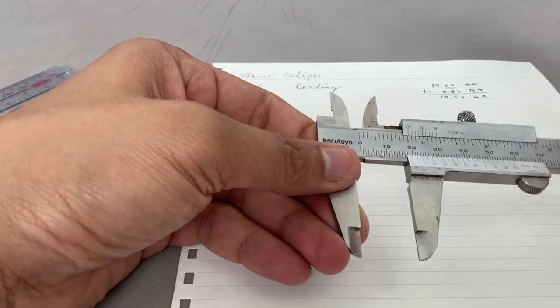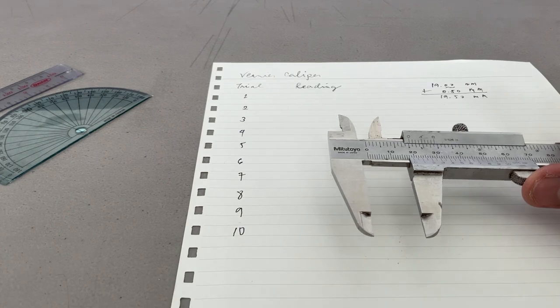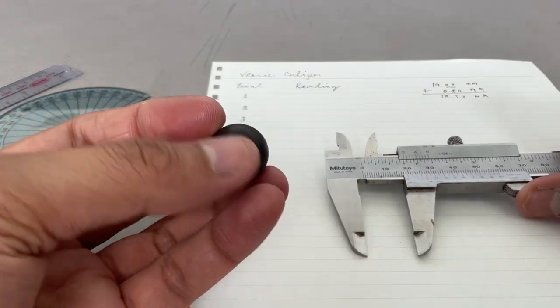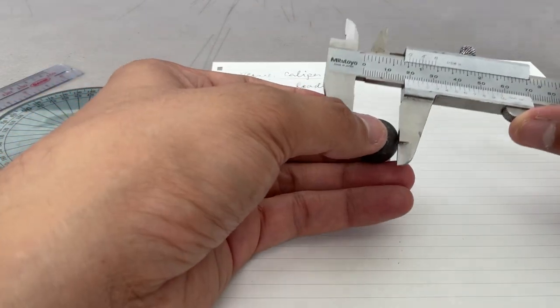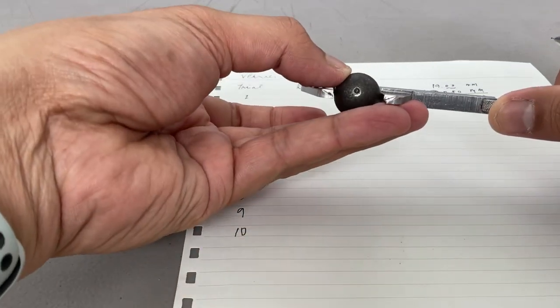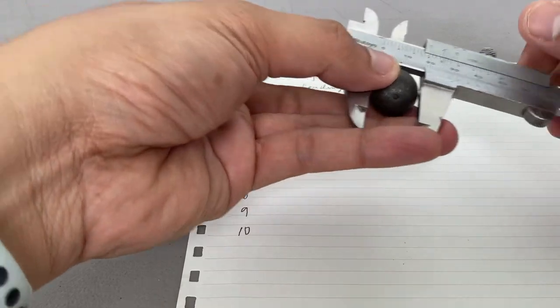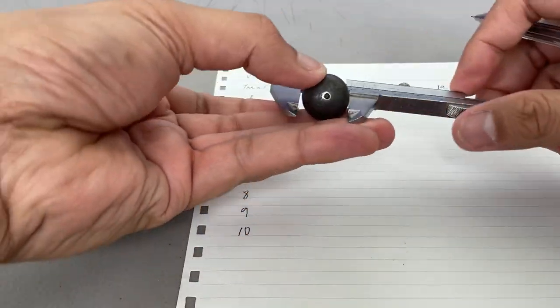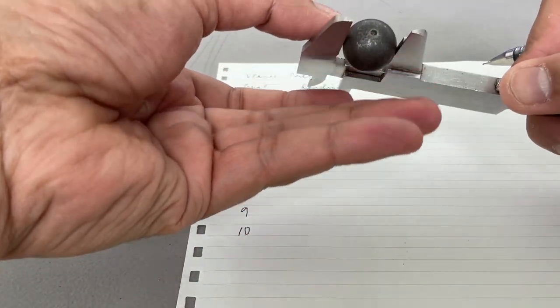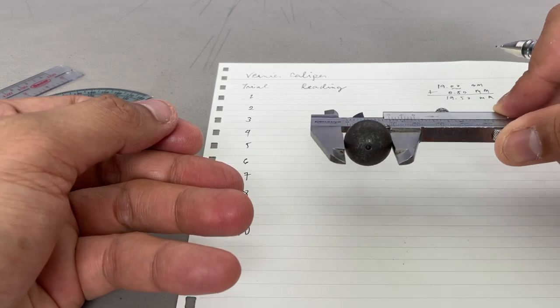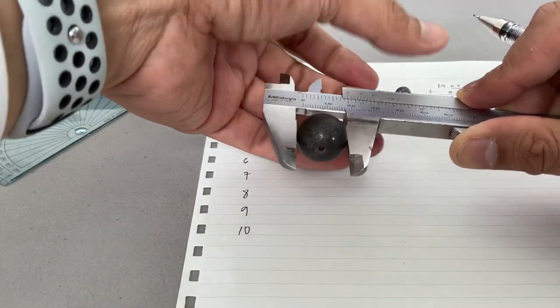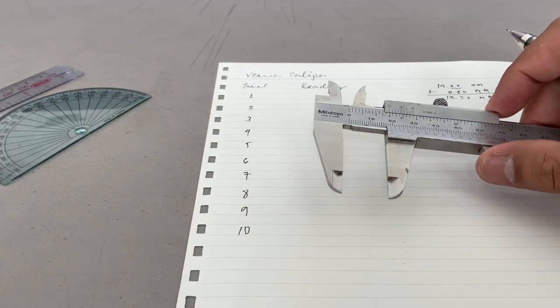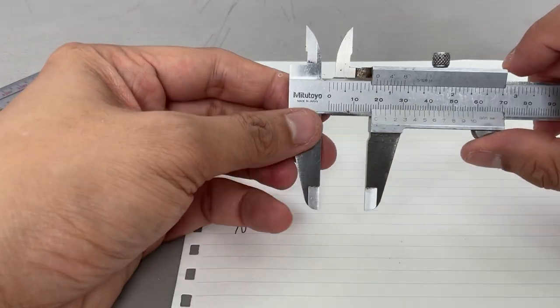Now our experiment is about how to determine the diameter of this and later on the density. So let's measure the diameter of this using a vernier caliper. Make sure the diameter, you can unlock this, you can push it, is it in the middle? Okay, so more or less, then you can lock it, then you're ready to measure.